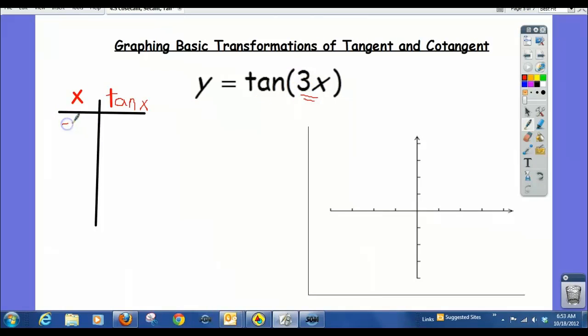So recall that when we graph tangent, just like sine and cosine, you go 0, π over 2, π, 3π over 2, 2π. Those are like the intervals we use. We're going to use these x values for tangent. And I'm not going to go through these values over again. We talked about how to get these values, and you should all be able to do it.